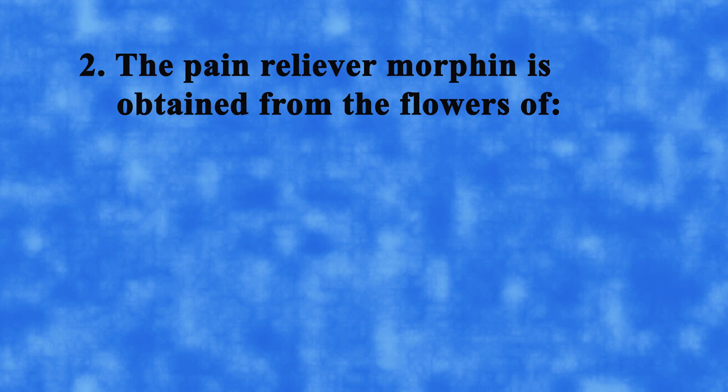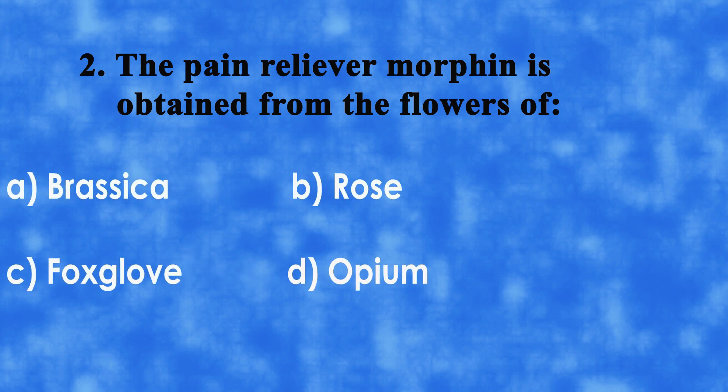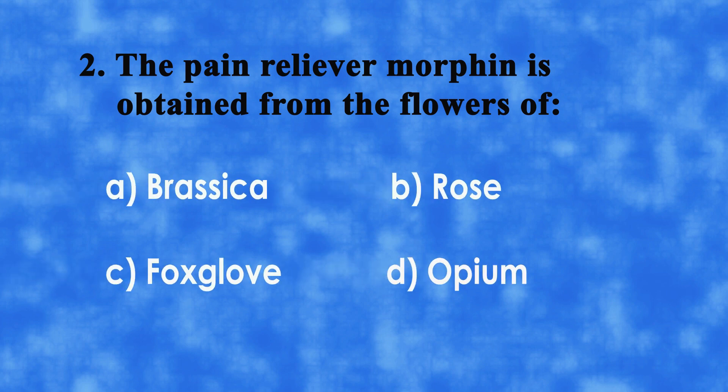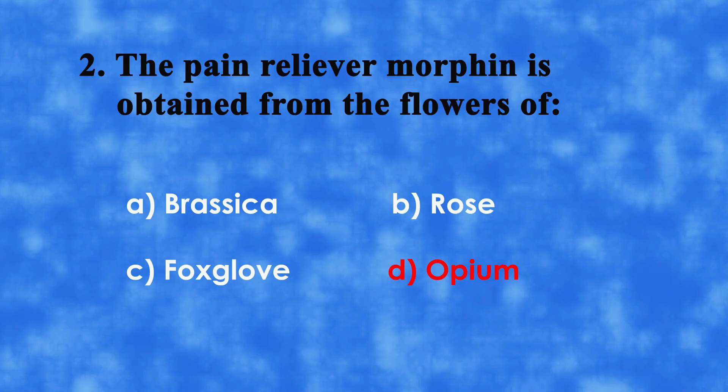No. 2: The pain reliever morphine is obtained from the flowers of A. Brassica, B. Rose, C. Fox Glove, or D. Opium. The correct answer is D. Opium.